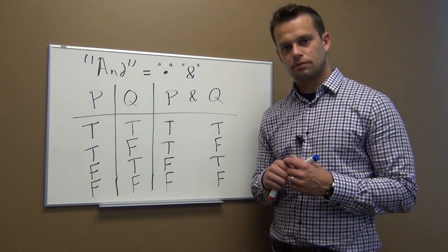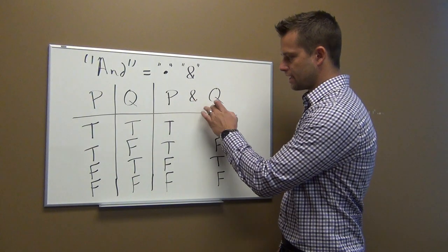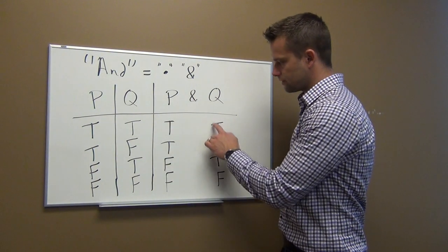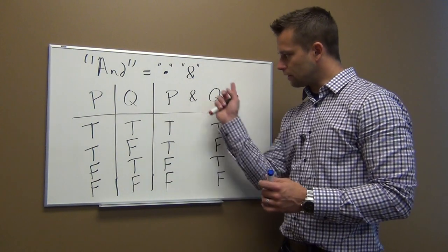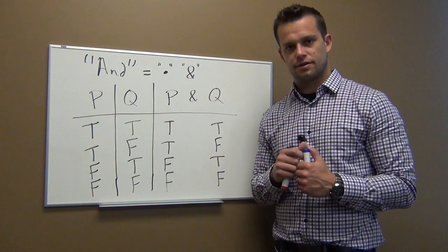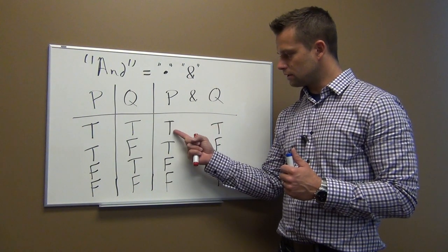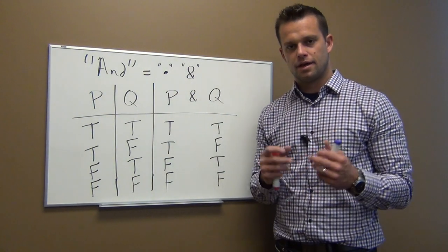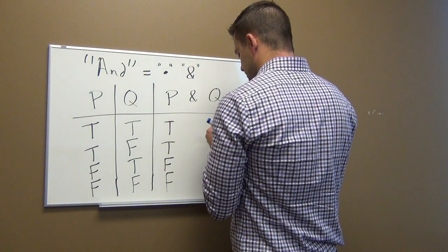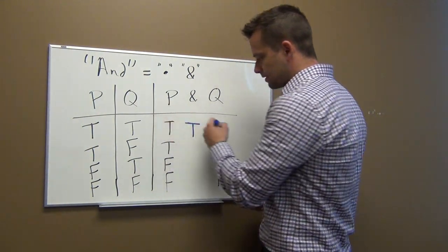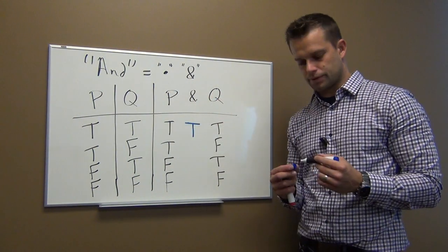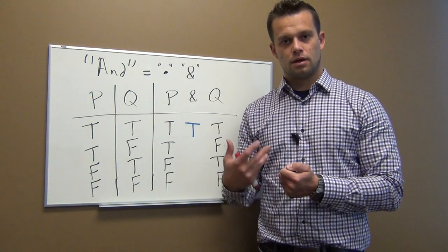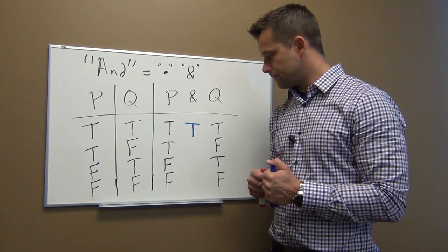When is an AND statement true? If P is 'I have a brother' and Q is 'I have a sister,' and it's true that I have a brother and it's true that I have a sister, then the overall truth value of 'I have a brother and I have a sister' is true. An AND statement is true when both variables are true. So if I tell you I have apples and I have oranges, and I actually do have both, that statement is true.